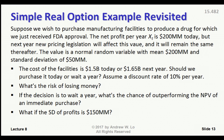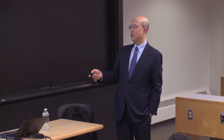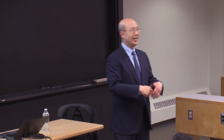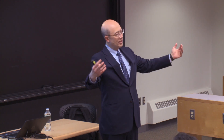This is not that different from what we did last time with the Bernoulli trial, but the nice thing is we can have all sorts of values in between. The cost of the facilities is $1.5 billion today, or $1.65 billion next year. Should we purchase today or wait a year? Assume a discount rate of 10%. Now I'm going to ask different questions: what's the likelihood of losing money on this deal? And if the decision is to wait a year, what's the chance of outperforming the NPV of an immediate purchase? What if the standard deviation of profits is $150 million instead of $50 million — if there's a lot more risk in the market?